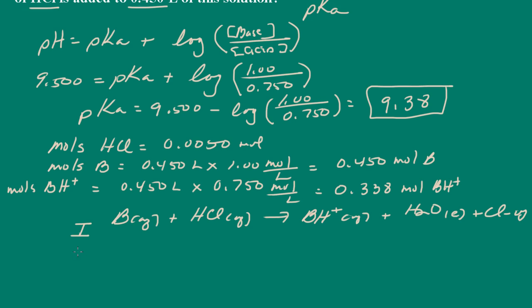So we'll set up, we'll talk about initial number of moles, the change that occurs during the reaction, and then the amount after the reaction. So here we start off with 0.45 moles of base and we add 0.005 moles of acid to this. And then of course we already have 0.338 moles of the conjugate acid.